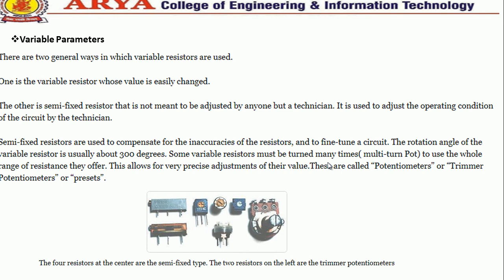Semi-fixed resistors are used to compensate for inaccuracies of resistors and to fine-tune a circuit. The rotation angle of a variable resistor is typically about 300 degrees. Some variable resistors must be turned many times to use the whole range of resistance they offer, allowing very precise adjustment of their values.